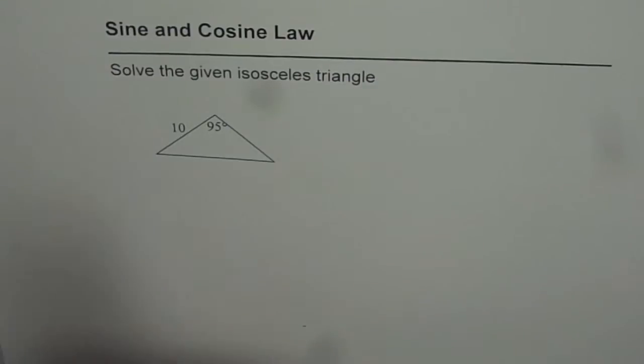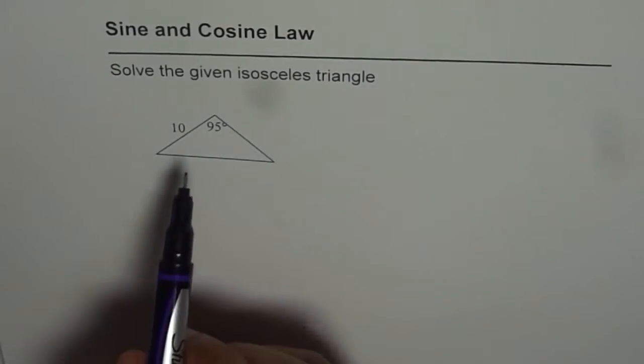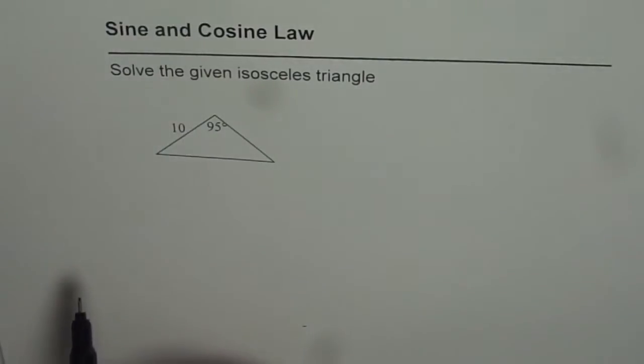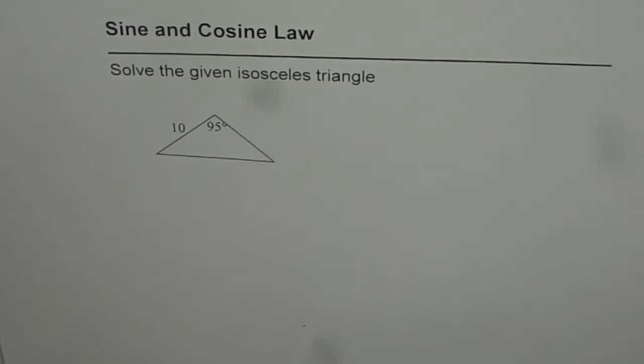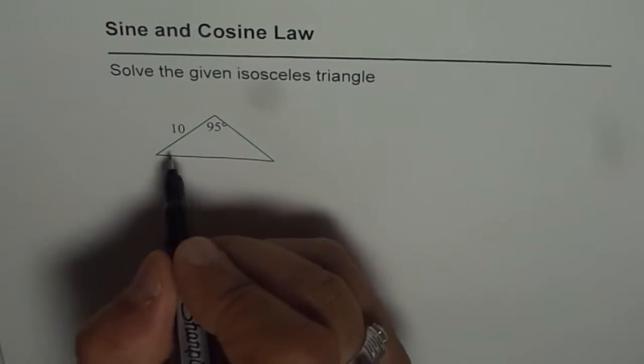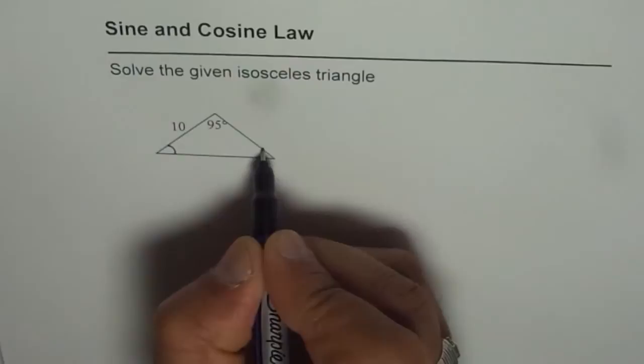Now if an isosceles triangle is given to us, and in this case we have 95 degrees given to us, the two sides should be of equal angle. Since sum of the angles in a triangle is 180, there is only one possible isosceles triangle in this case. So these two angles should be equal.